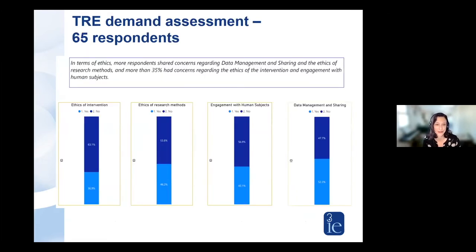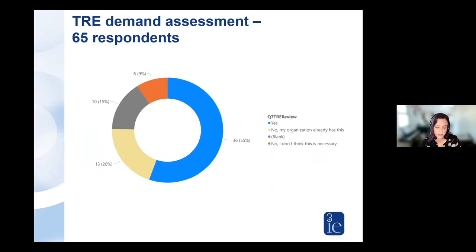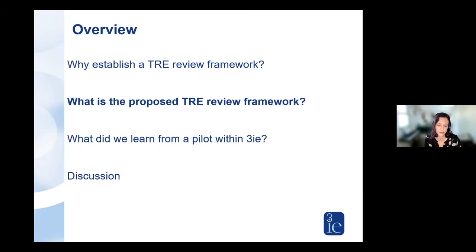We know we're not alone in thinking about these issues. In 2021, 3IE sent out a questionnaire regarding interest in topics around transparency, reproducibility, and ethics. Out of 65 respondents, more than half have concerns regarding ethical data practices, and between 35 and 45 percent had concerns regarding the interventions we study, the research methods we use, and engagement with human subjects. 55 percent indicated they'd be very interested to learn more about a TREE review process. So we want to respond to this need not just within 3IE, but within the community.